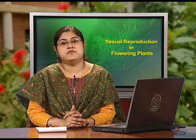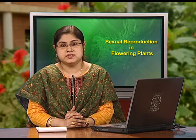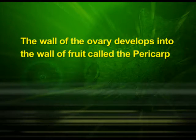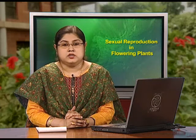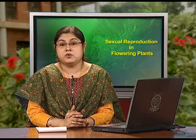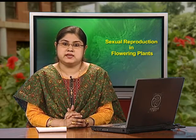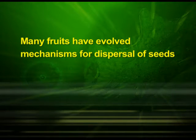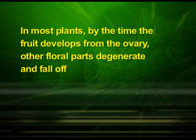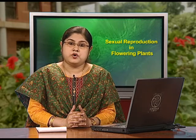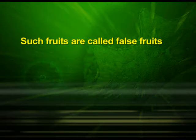As ovules mature into seeds, the ovary develops into a fruit, meaning the transformation of ovules into seeds and ovary into fruit proceeds simultaneously. The wall of the ovary develops into the wall of the fruit called the pericarp. Fruits may be fleshy, as in guava, orange and mango, or dry, as in groundnut and mustard. In most plants, other floral parts degenerate and fall off by the time the fruit develops. However, in a few species such as apple, strawberry and cashew, the thalamus also contributes to fruit formation — such fruits are called false fruits.